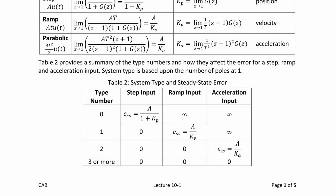Just like with analog systems, we also have system types, but the system types are based upon the number of poles at 1, as opposed to the number of poles at 0. A type 0 system has no poles at 1 and has steady state error of A over 1 plus KP; it cannot track a ramp or acceleration input, so those are infinite. A type 1 system has step error of 0 and steady state error of A over KV, with infinite error for acceleration. A type 2 system can track step and ramp with zero steady state error, but the error for acceleration is A over KA. Type 3 or more can track step, ramp, and acceleration with zero steady state error.